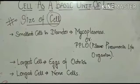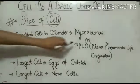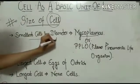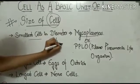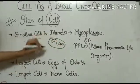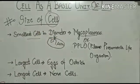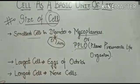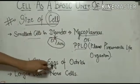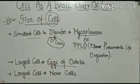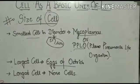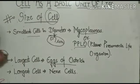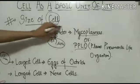If I talk about the smallest cell, the smallest cell is mycoplasma, which is almost 0.1 micrometer. And it's called PPLO, pleuro pneumonia-like organism. If I talk about the largest cell, then it's the egg of ostrich, and its size is 15 cm in diameter.